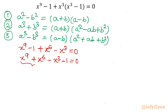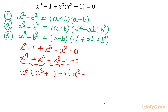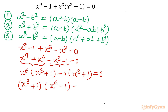From the first two terms I will take x power 6 common, and from the last two terms I will take negative 1 common, giving x power 6 (x cubed plus 1) minus 1(x cubed plus 1) equals 0. Taking (x cubed plus 1) common: (x cubed plus 1)(x power 6 minus 1) equals 0. Our degree 9 polynomial is now factored into a cubic and a hexic.